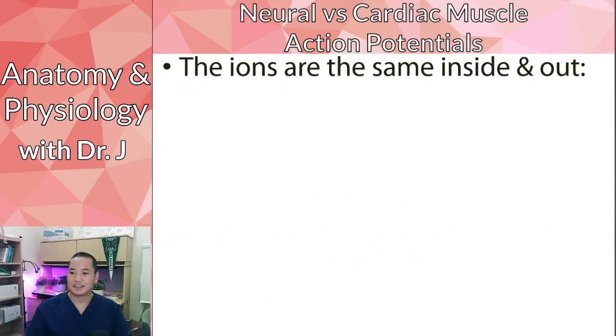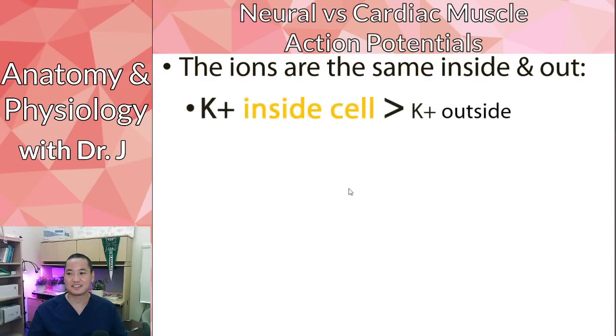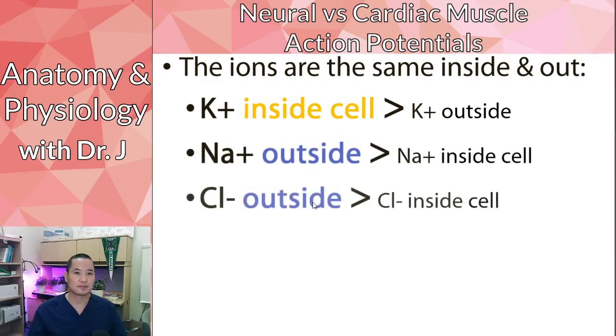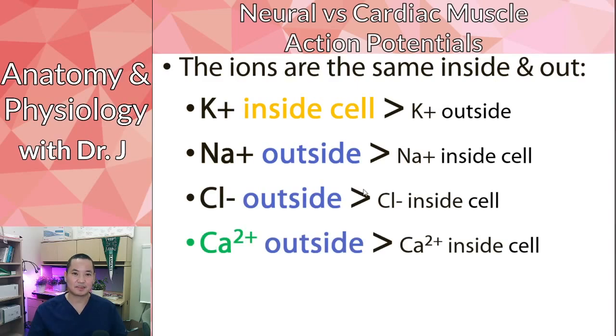So the ions, this is where, are you starting completely from square one, if you were here last semester? The good thing is that the ions are still the same inside and out. You still have more potassium on the inside, the banana is still there. And you still have more sodium chloride on the outside, the ocean is still salty. And you still have more calcium on the outside.